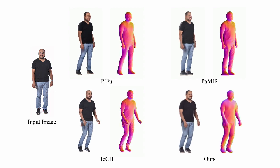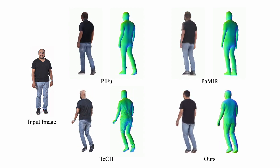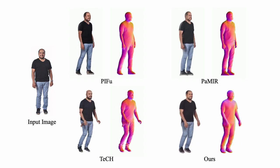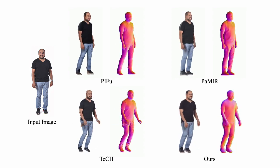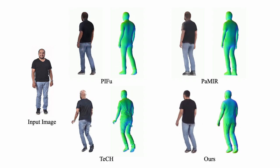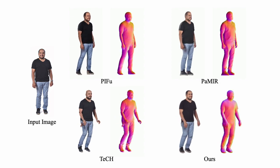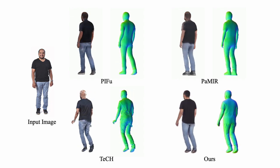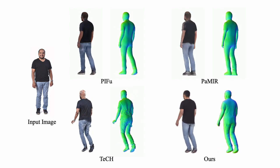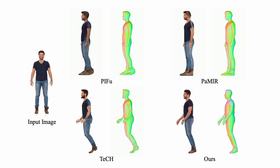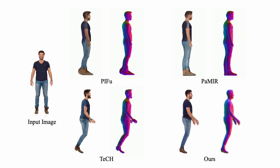To mitigate oversaturation in SDS-based generation and enhance realism, TeCH employs strategies to minimize SDS-denoising diversity, including precise text inference via a question-answering algorithm, textural inversion, and diffusion model fine-tuning. Nonetheless, TeCH struggles to achieve texture consistency with the input image due to the lack of image-level guidance in SDS-denoising.